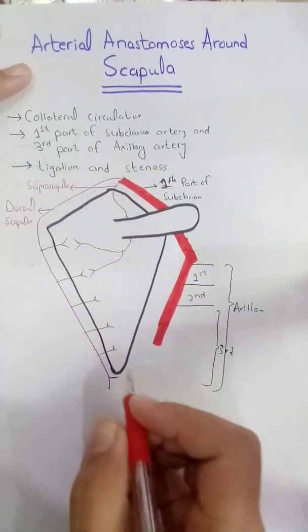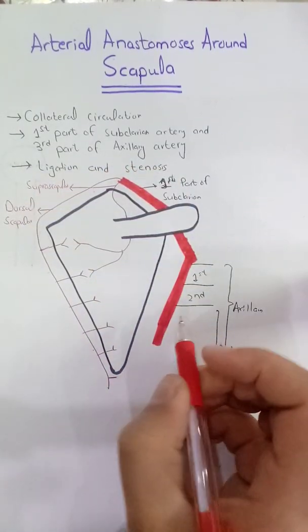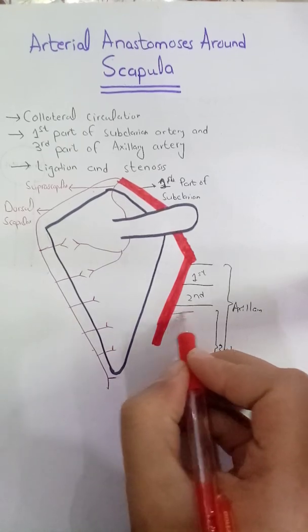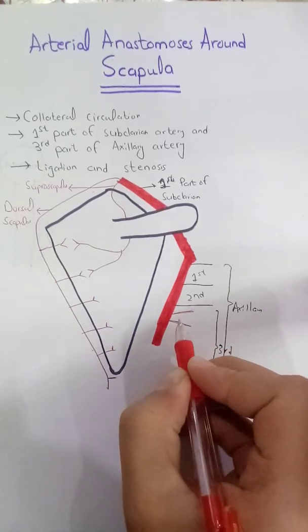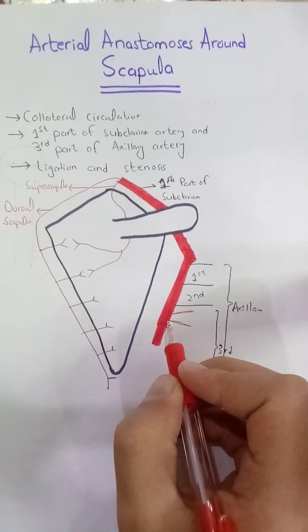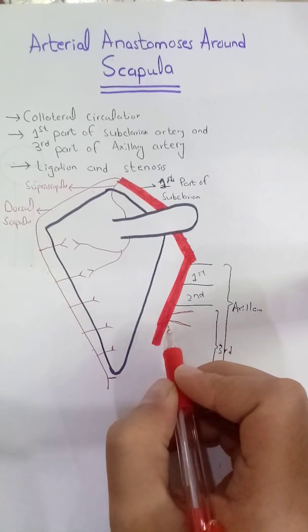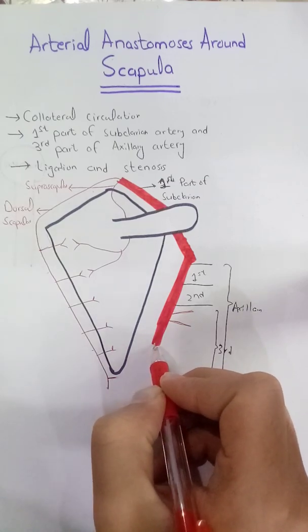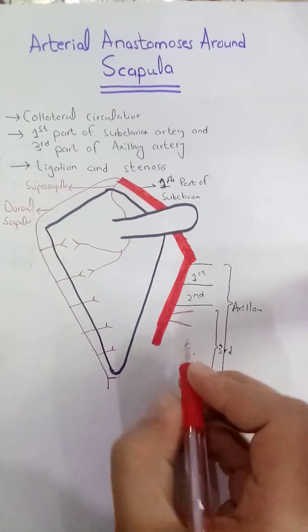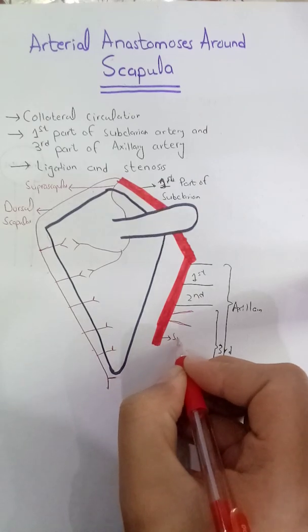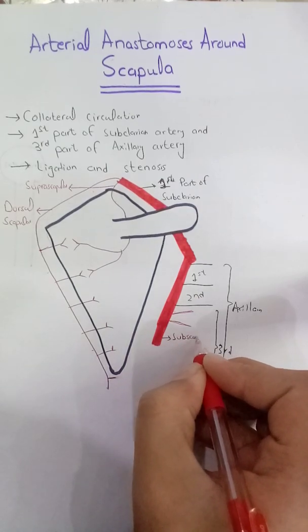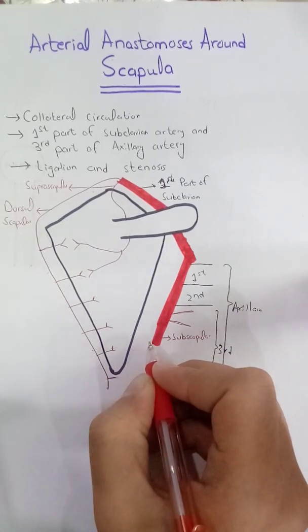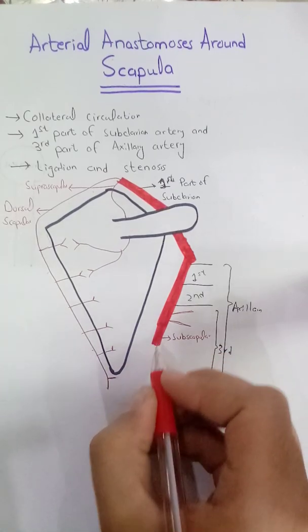These are the branches of the subclavian artery. The third part of the axillary artery gives a total of three branches. Two are the anterior and the posterior circumflex humeral arteries, which move around the surgical neck of the humerus. The third branch — the main branch — is the subscapular artery, which then divides into the circumflex scapular and the thoracodorsal.